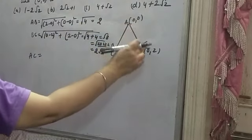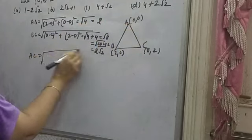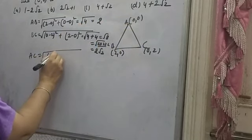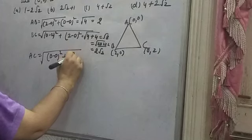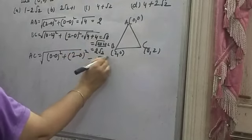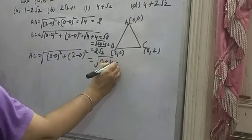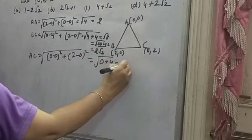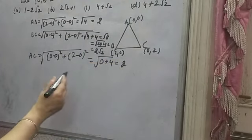AC: suppose X1, Y1, X2, Y2. X2 minus X1 is 0 minus 0 whole square, plus Y2 minus Y1 is 2 minus 0 whole square. 0 squared is 0, 2 squared is 4. Under root 4 is 2.